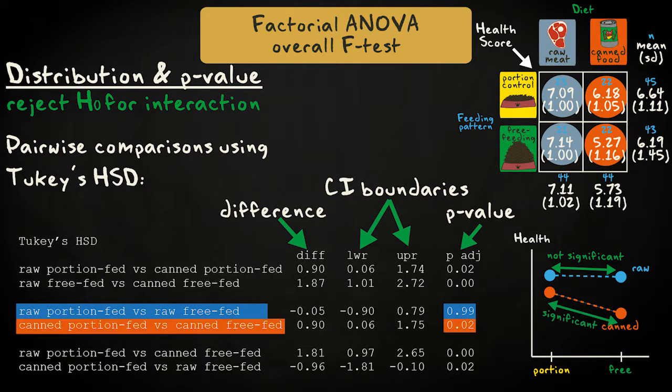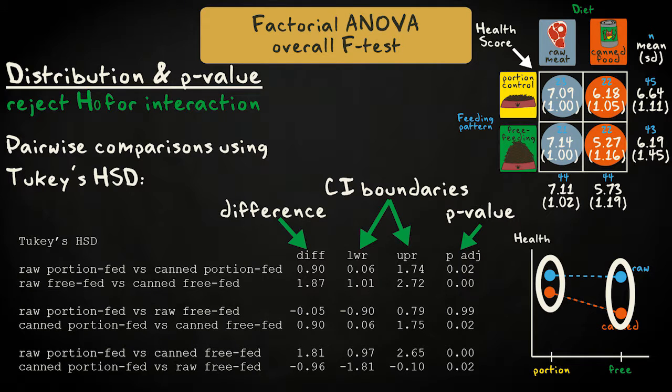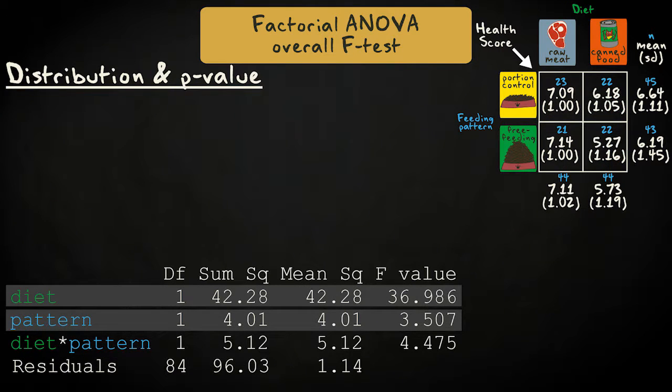However, the health rating of cats free-fed on canned food is significantly lower than the health rating of cats fed controlled portions of canned food. Since the effect of diet appears for both levels of feeding pattern, the main effect can be meaningfully interpreted.